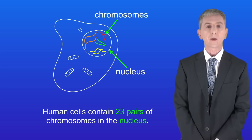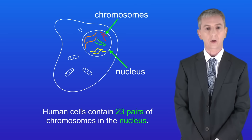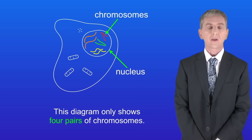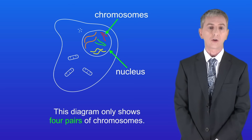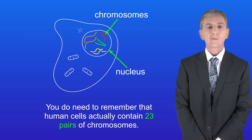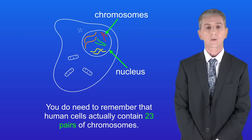In a previous topic we saw that human cells contain 23 pairs of chromosomes in the nucleus, and I'm showing you a human cell here. You'll notice that this diagram only shows four pairs of chromosomes — that's to make the diagram easier to see, but you need to remember that human cells actually contain 23 pairs of chromosomes.